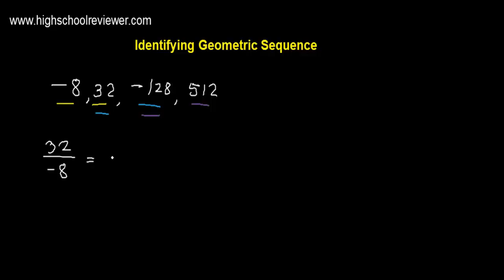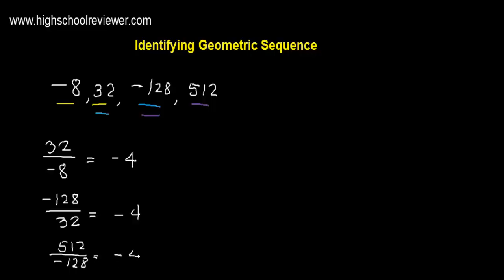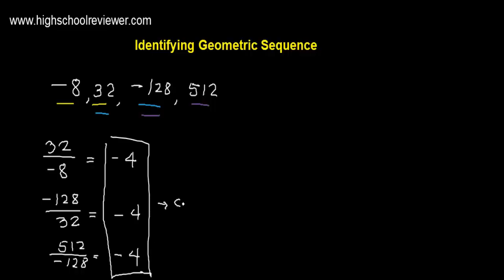So 32 over negative 8 is equal to negative 4. Then we have negative 128 over positive 32, which is also negative 4. And lastly, 512 over negative 128 is equal to negative 4. The three ratios are all equal, so we have a common ratio. Since we have a common ratio, this set of numbers is a geometric sequence.